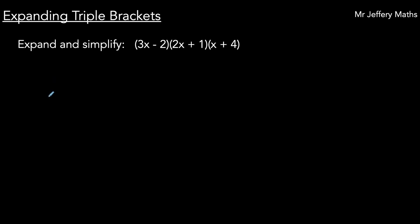Welcome to a video taking a look at expanding triple brackets. Here we're asked to expand and simplify 3x minus 2 bracket, 2x plus 1 bracket, x plus 4. What 'expand and simplify' means in this context is that we want to be multiplying each of these expressions — so 3x minus 2, 2x plus 1, and x plus 4 — by each other.